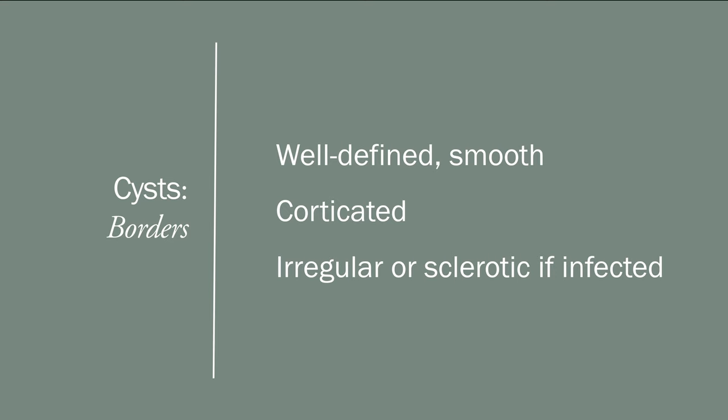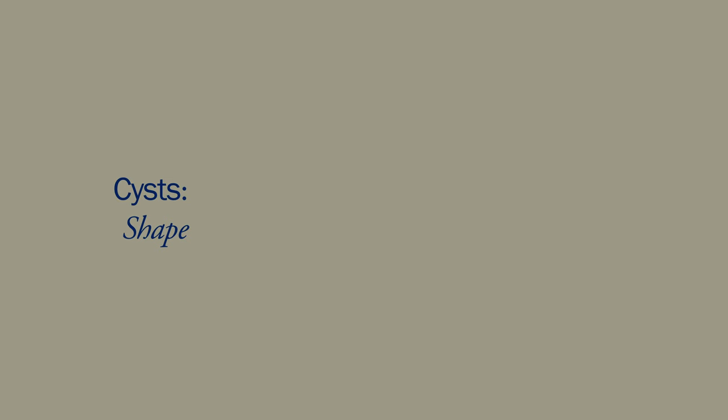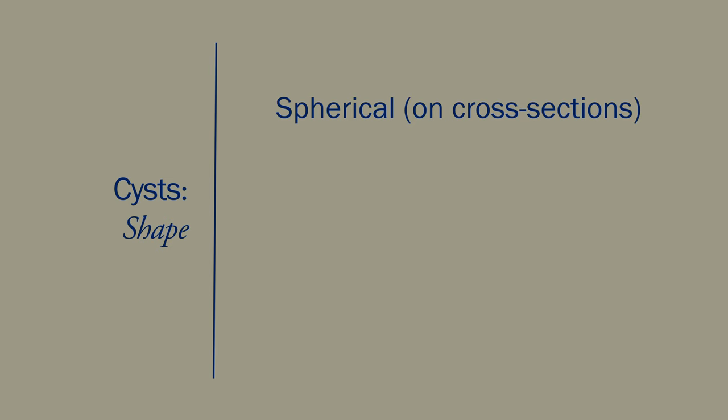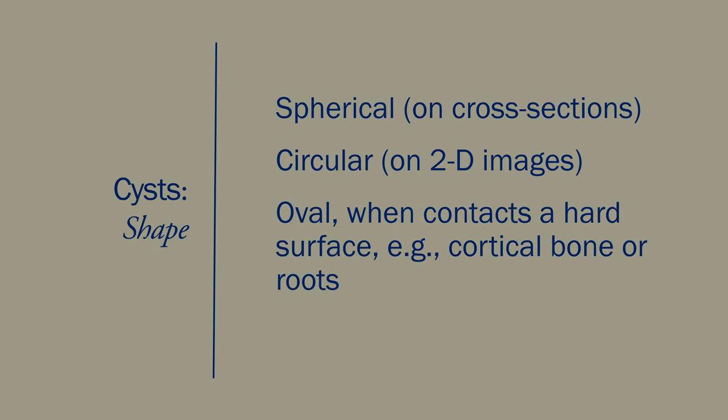If the cyst becomes infected, the margin may become irregular and can even become sclerotic. The sclerotic border is a thick irregular cortical margin. Let's talk about the shape of a cyst. A cyst when small is spherical; on a two-dimensional image such as a periapical radiograph or panoramic, a small cyst will have a circular appearance. When the cyst becomes larger and contacts a hard surface such as cortical bone, the walls of the inferior alveolar canal, or roots, it may become oval.